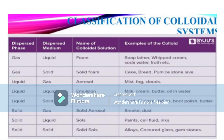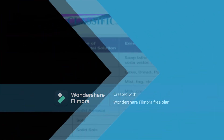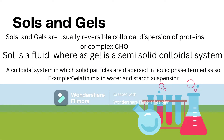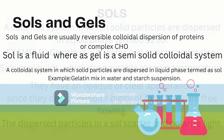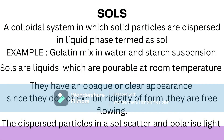Colloidal systems can also be classified based on the nature of the dispersed phase and continuous phase. Moving on to sols and gels — sols and gels are usually reversible colloidal dispersions of protein or complex carbohydrate. A sol is a fluid, whereas a gel is a semi-solid colloidal system. A colloidal system in which solid particles are dispersed in a liquid phase is termed a sol. Examples include gelatin mixed in water, starch suspension, and skim milk, because the milk protein is dispersed in water.